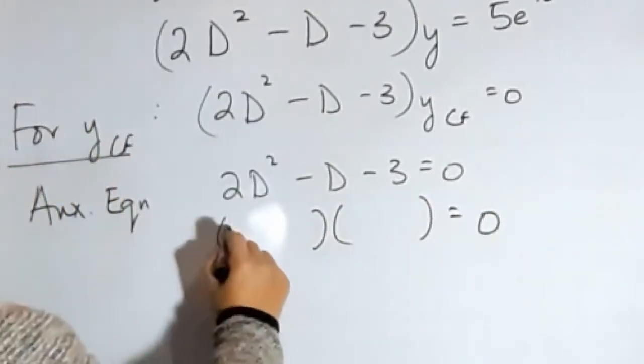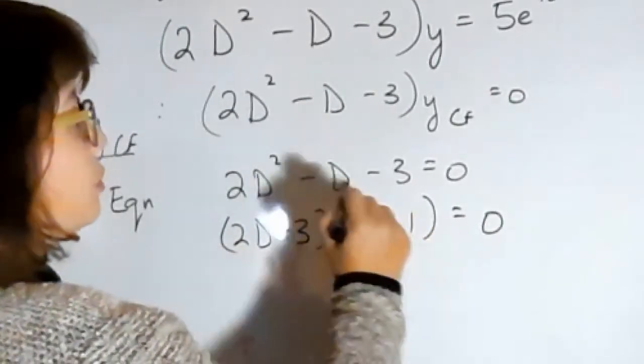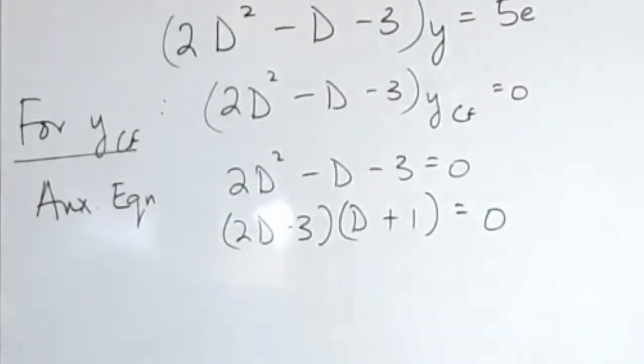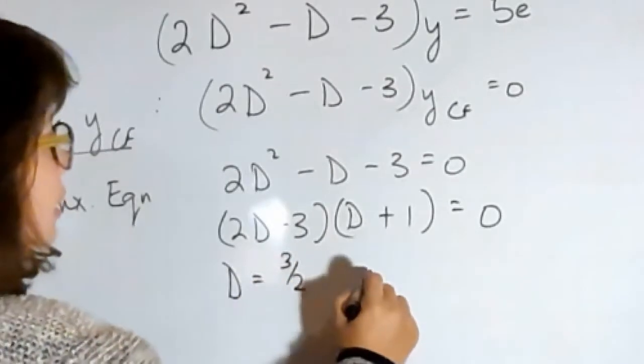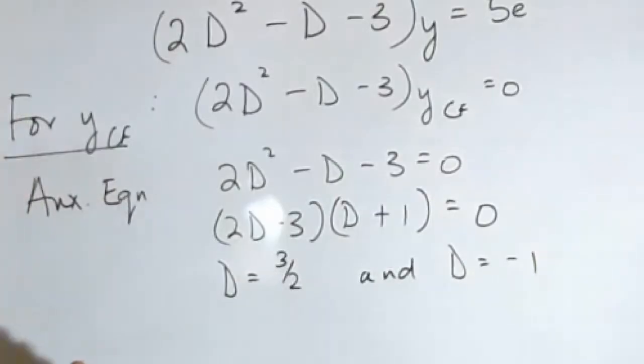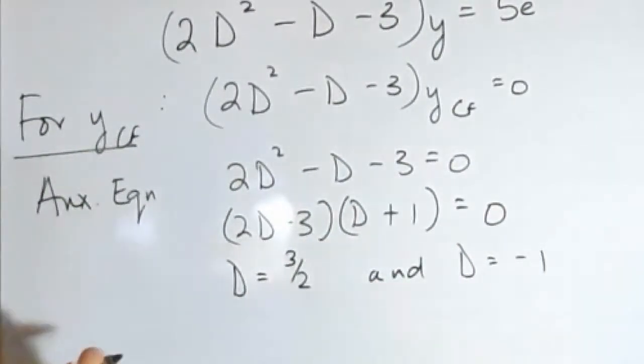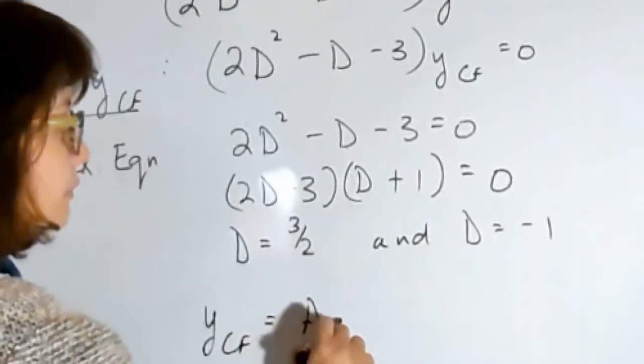And this you can either prime factorize or you can use your quadratic equation. So that means that d is either 3 over 2 and d is minus 1. So your roots are real and different, which means your complementary function is going to have this form.